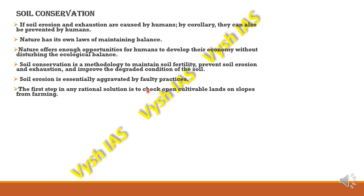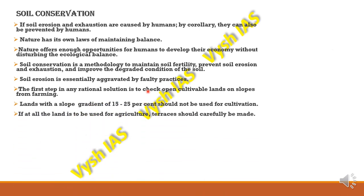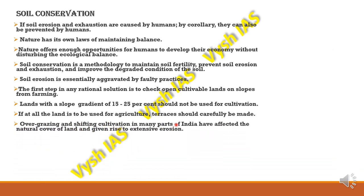The first step in any rational solution is to check open lands on slopes for farming. Lands with a slope gradient of more than 25% should not be used for cultivation. If land is being used for agriculture, terraces should be planned carefully so that there is not too much runoff. Overgrazing and shifting agriculture in many parts of India have affected the natural cover of land and given rise to extensive erosion.